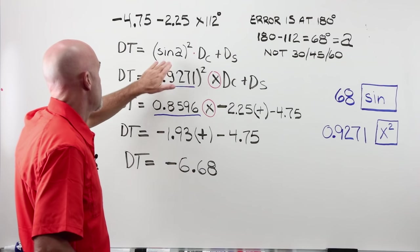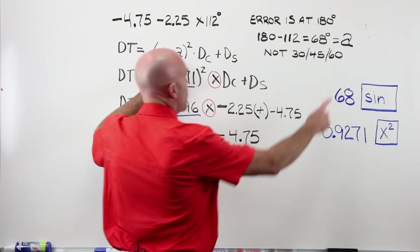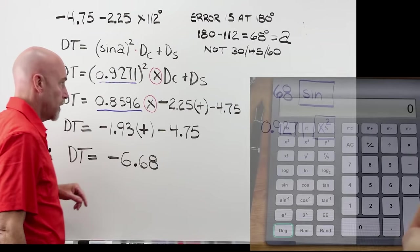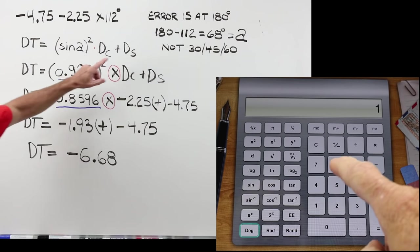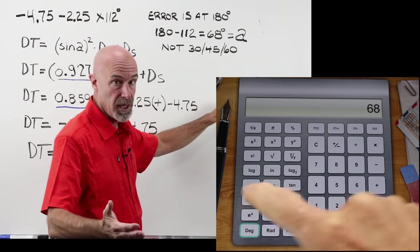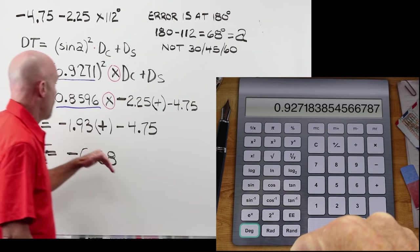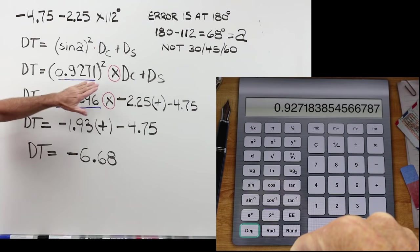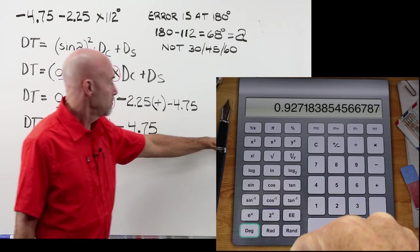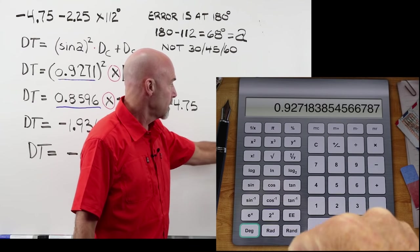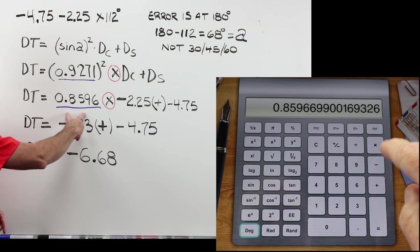The power that I am looking for is equal to the sine of A, the sine of 68 squared, multiplied times my cylinder plus my sphere. If I take my 68, go ahead, put it into your calculator, just enter 68 and hit the sine button. That's going to give you the 0.9271. Got it? Good. The next step is that we're going to square that. So take your 9271 that should already be in front of you, and it might be a whole lot longer than that, and hit your square button. You're now going to be here.